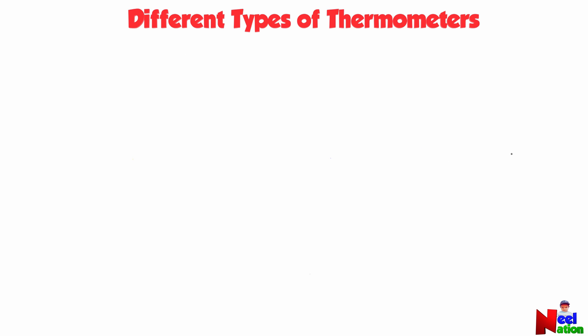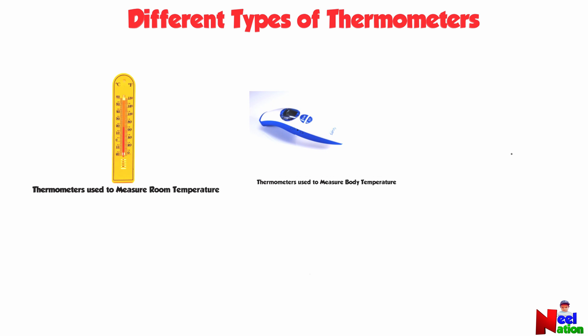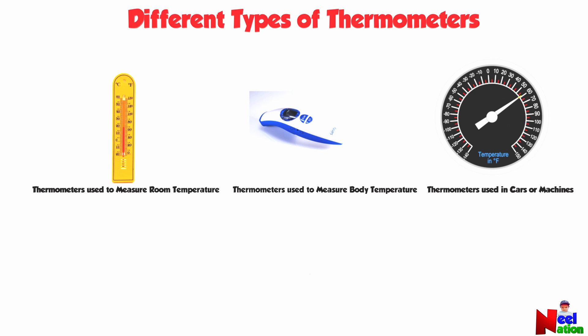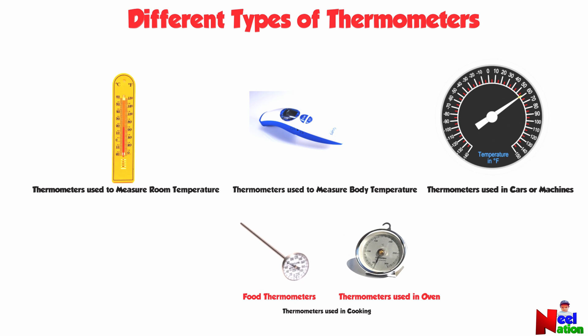Let's look at different types of thermometers. Some thermometers are used to measure room temperature, some are used to measure body temperature, some are used in cars or machines, and there are other types used while cooking or baking.